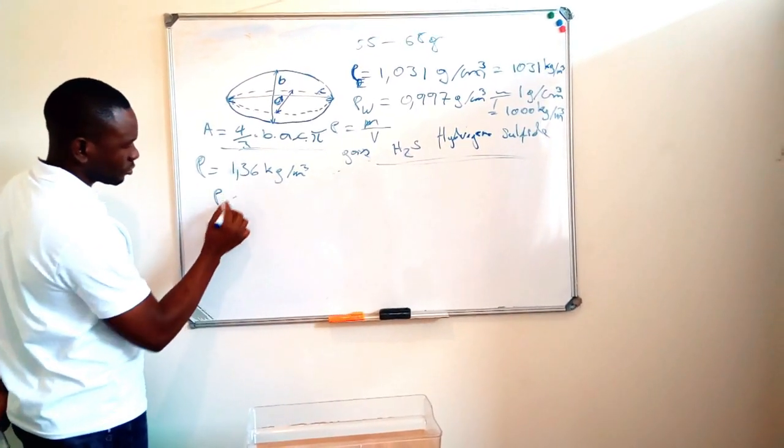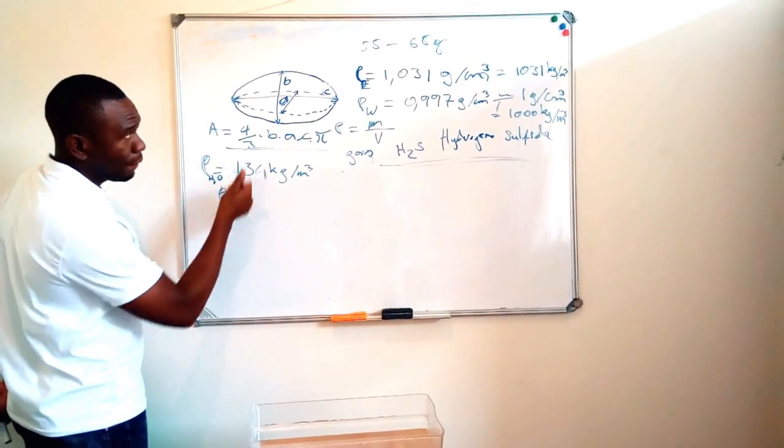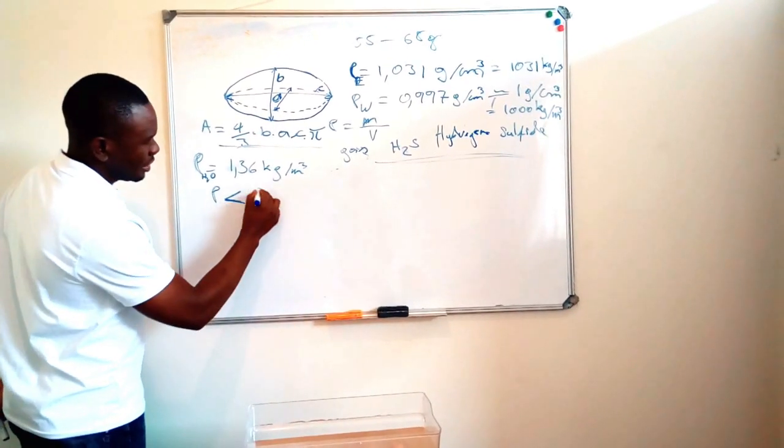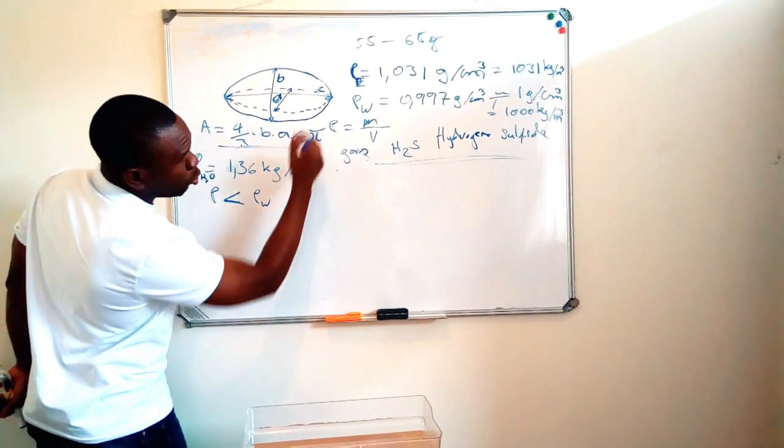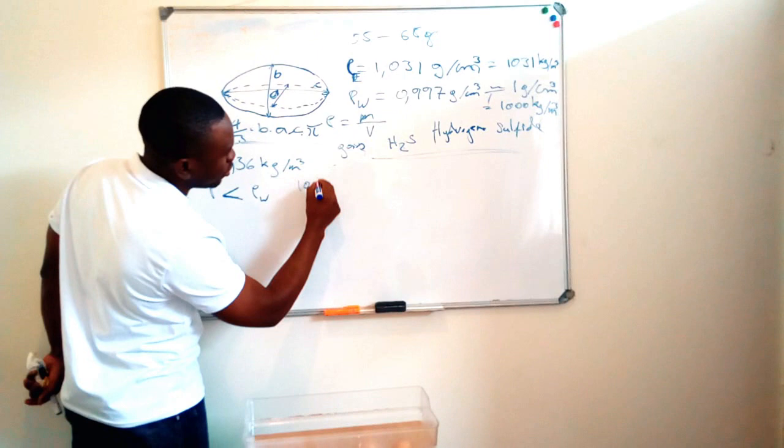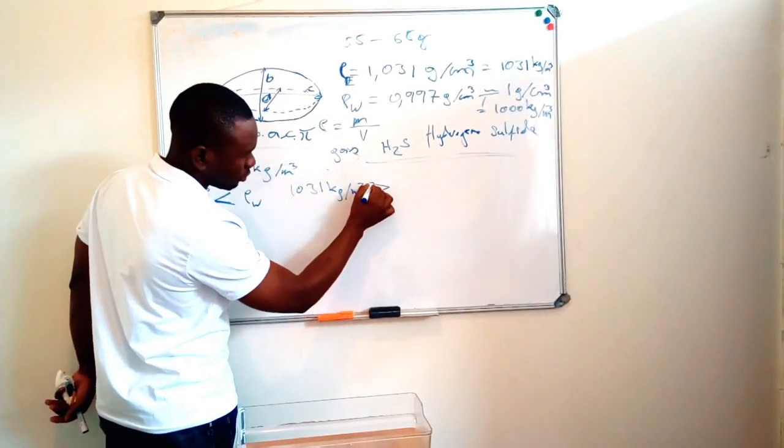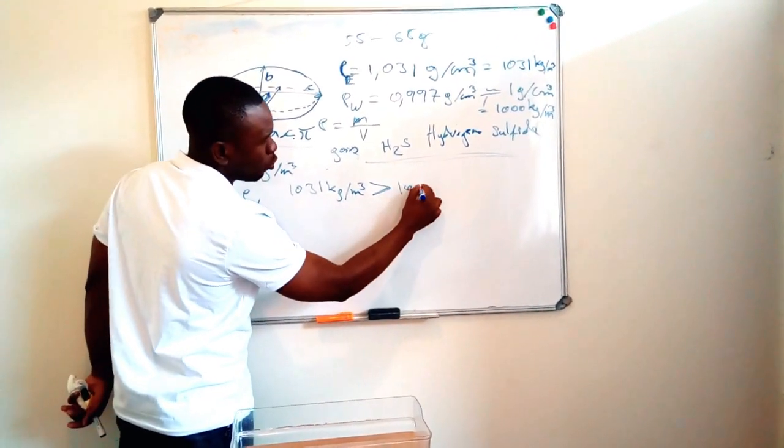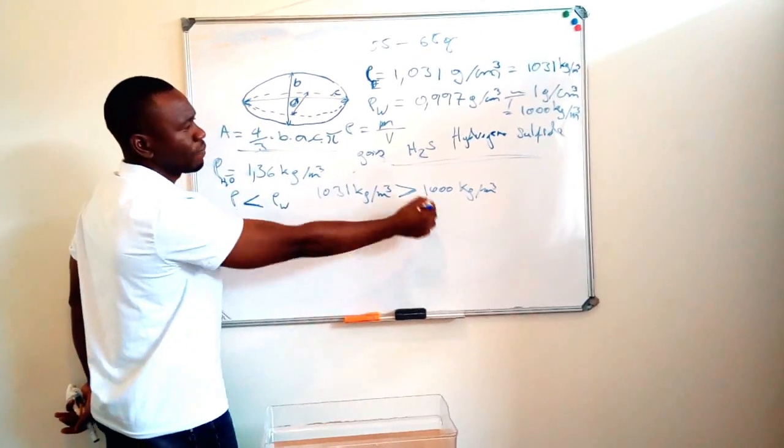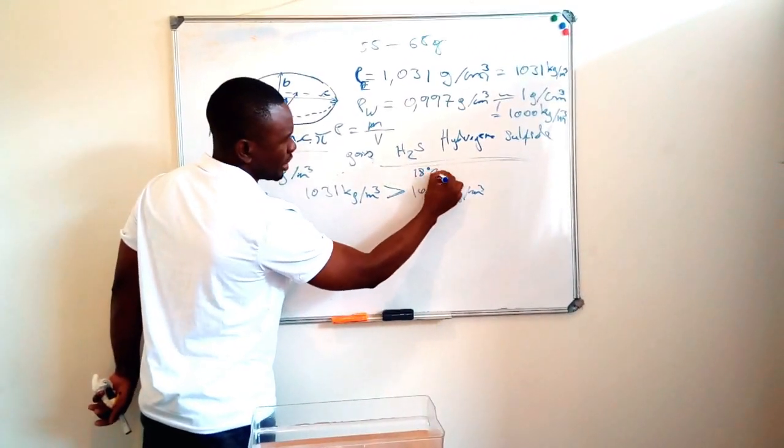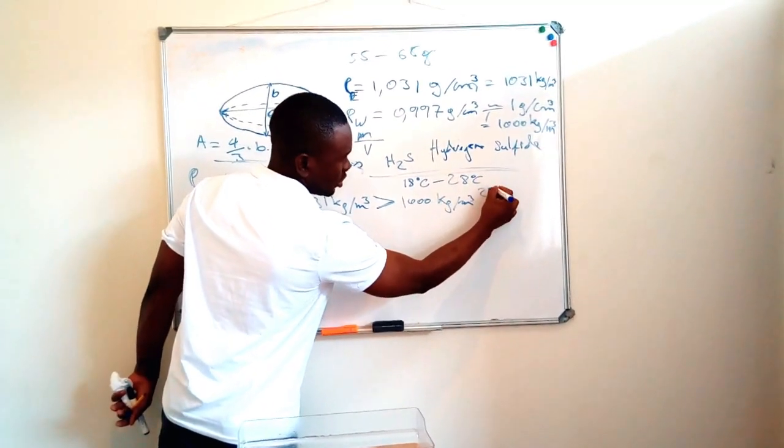So let's consider our egg here having 80% of its content at its fresh state and then 20% of its content in the decomposed state. So what's going to happen is for something to float at the surface of water, its density needs to be lesser than the density of water.